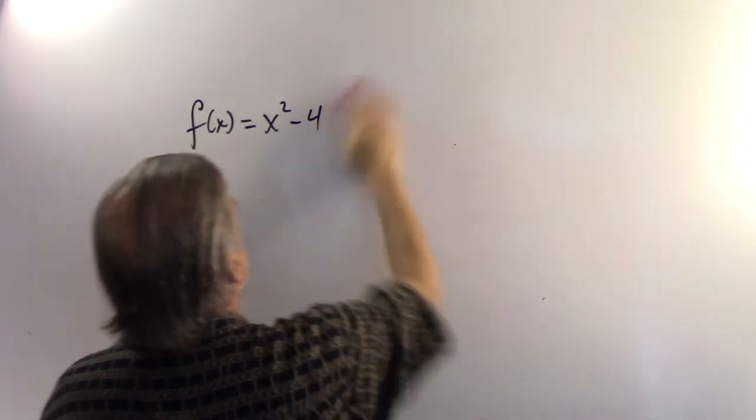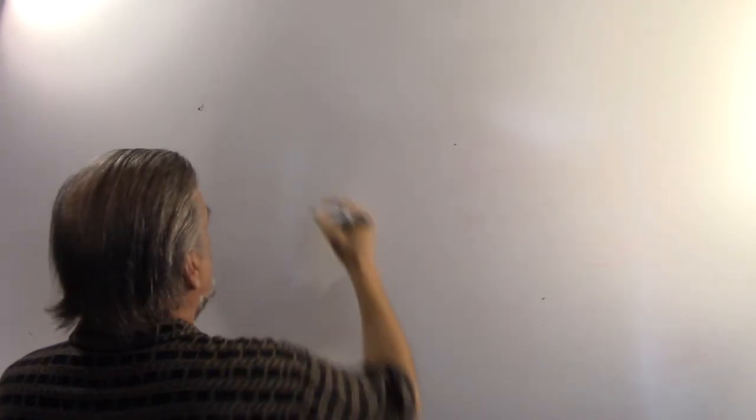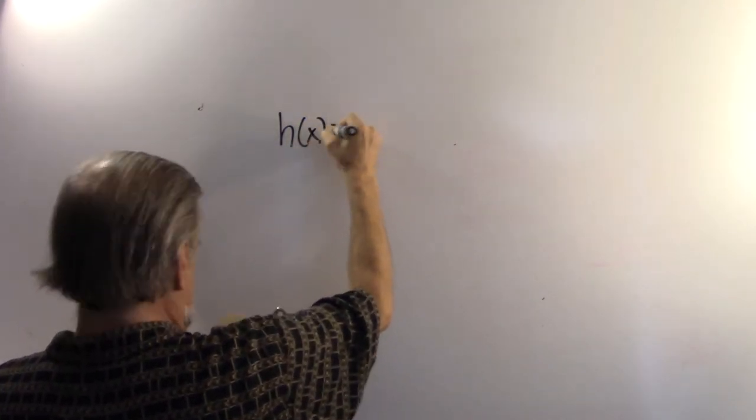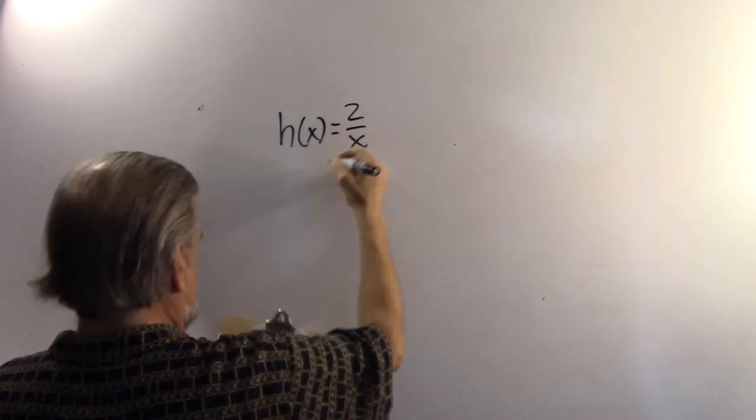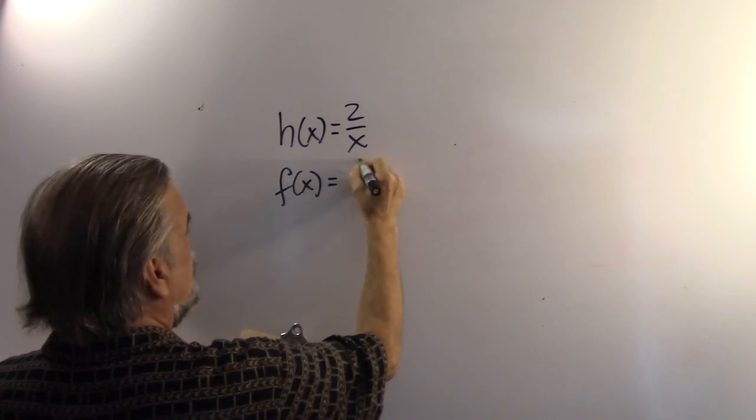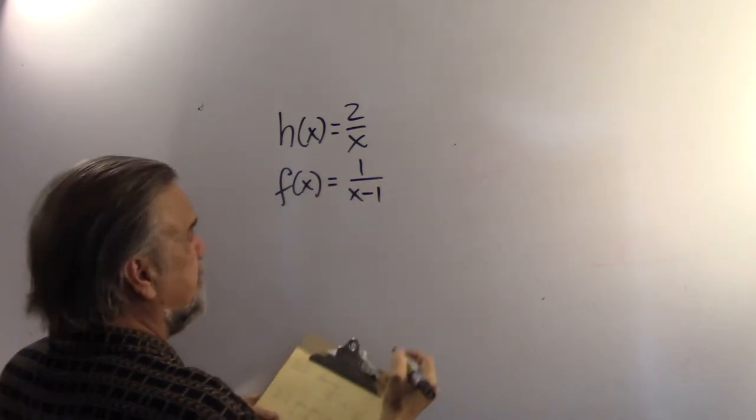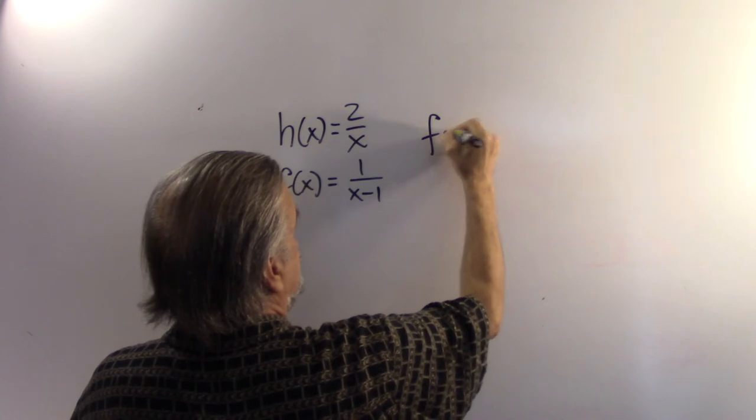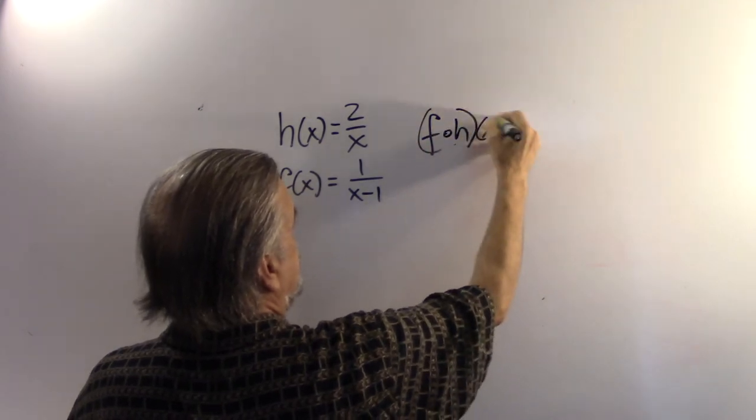Let's look at the example of, we're going to say h of x equals 2 over x, and f of x equals 1 over x minus 1. And I want to find what is f of h of x.